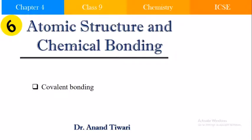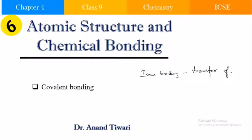Hello students. In the previous lecture we discussed about covalent bonding and how it is different from ionic bonding. Whereas ionic bonding involves the transfer of electrons, covalent bonding involves the sharing of electrons.